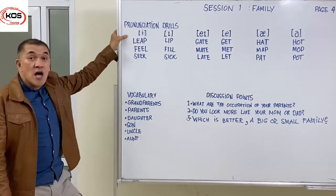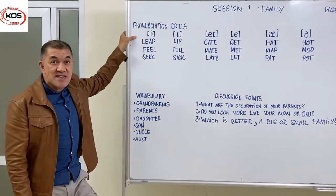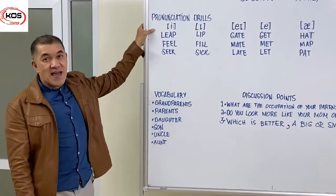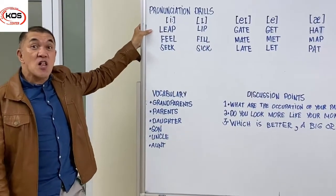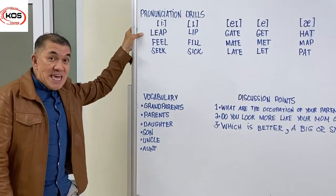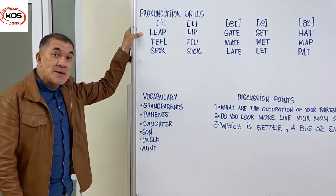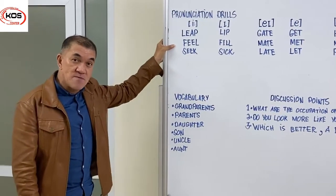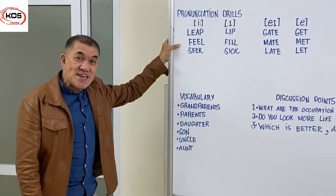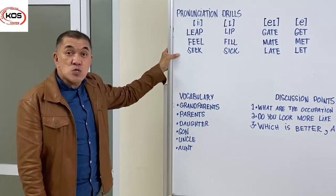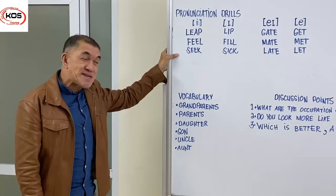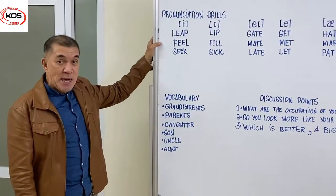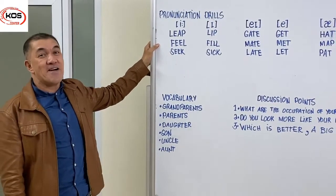We have the long E sound. I'm going to read the first long E word: leap, leap, leap. Next word: feel, feel, feel. Next word: seek, seek, seek. Now I'm going to read all the words together: leap, feel, and seek.